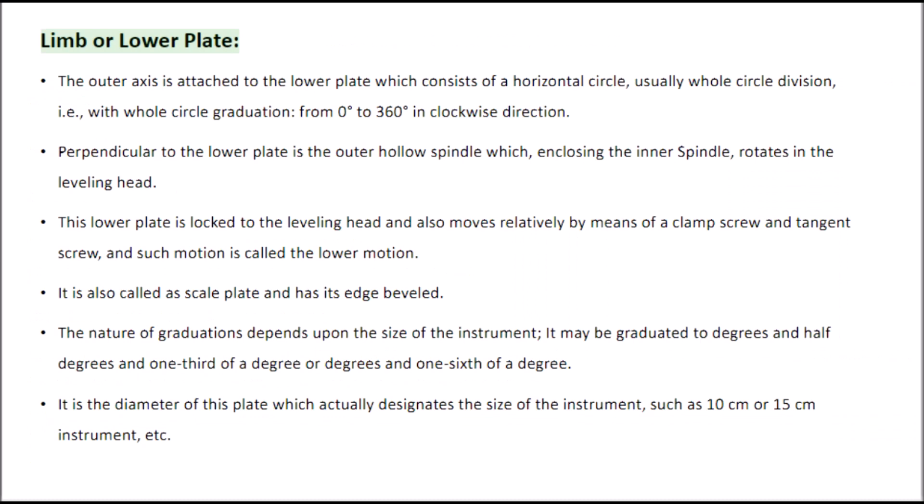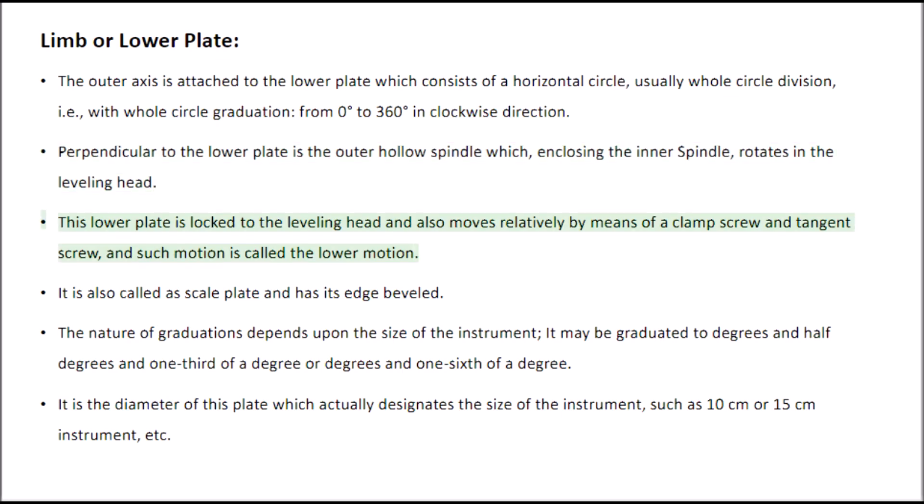Limb or Lower Plate. The outer axis is attached to the lower plate, which consists of a horizontal circle, usually with whole circle graduation from 0 to 360 degrees in a clockwise direction. Perpendicular to the lower plate is the outer hollow spindle which, enclosing the inner spindle, rotates in the leveling head. This lower plate is locked to the leveling head and also moves relatively by means of a clamp screw and tangent screw, and such motion is called the lower motion.